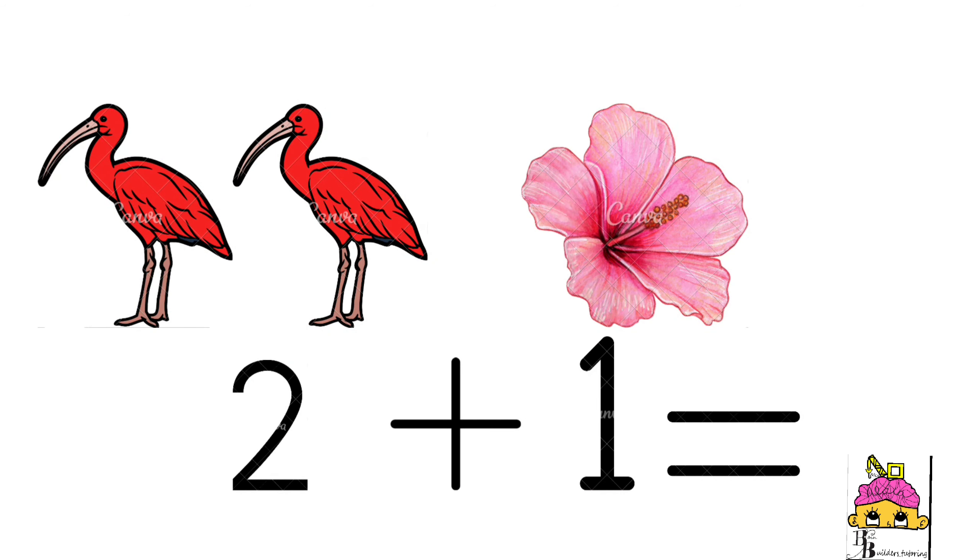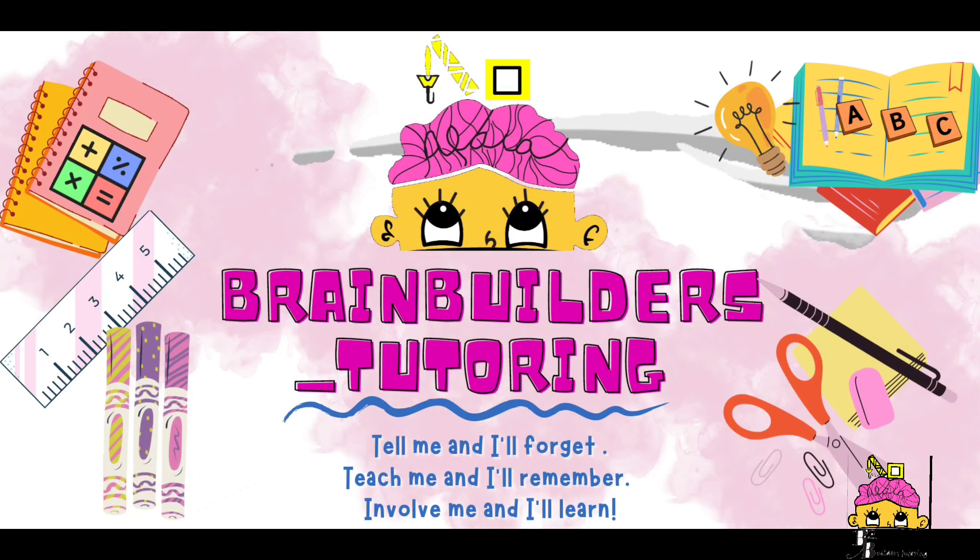We have 2 scarlet ibis and 1 hibiscus. Put them together. 2 plus 1 equals 3. Excellent job. 5. 7.